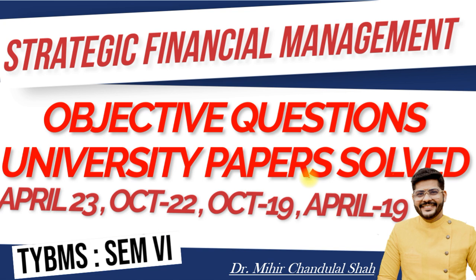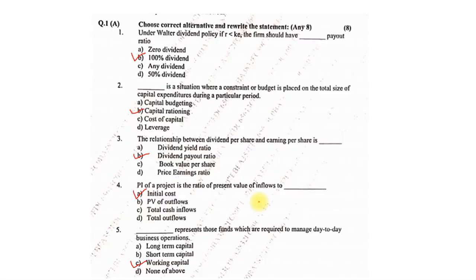Now whatever objective questions were there — that is question number 1A and 1B — all those have been solved in these four papers. We will see one by one in each year what objectives were asked. The very first one was April 2023, under which we had the first question based on MCQs, so I'll just read out that first.